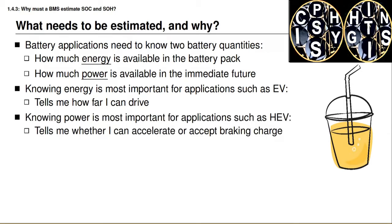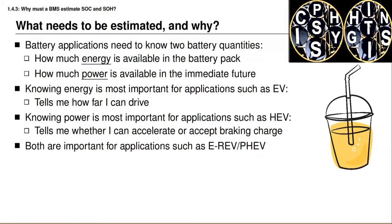We can contrast that with the concept of power. Power is the rate of energy usage. Knowledge of how much power is available in the immediate future is most important for applications like hybrid electric vehicles. This information tells me whether I can accept recharge energy quickly or whether I can provide energy quickly to accelerate. In the example, power is illustrated by the straw. If the straw has a wide diameter then we can extract soda quickly from the glass; if the straw has a narrow diameter we can extract soda only slowly. So energy and power are like soda and a straw. Both power and energy estimates are important for extended range electric vehicles and plug-in hybrid electric vehicles because they need to know how far they can drive but also how quickly they can accelerate and decelerate.